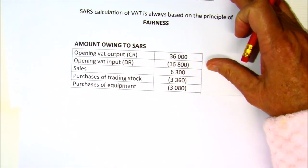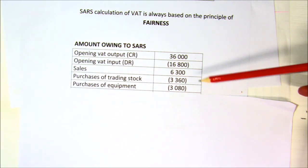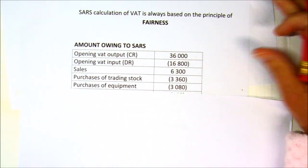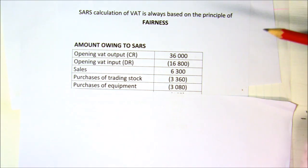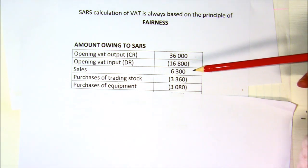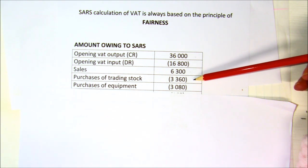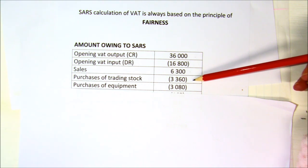The first entries involve selling. Irrespective of whether you sell the goods for cash or on credit, the VAT portion of it you owe to SARS — so you owe more to SARS. However, when you buy your trading stock, that's your input VAT and you can claim it back, so you can minus R3,360.